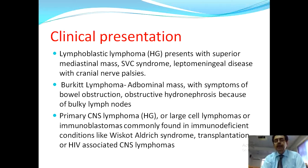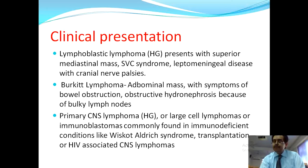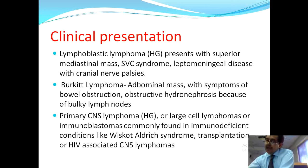Burkitt lymphoma may present with jaw or maxilla involvement, or with abdominal masses due to GI tract involvement. The patient presents with GI obstruction, sometimes perforation, and sometimes obstructive hydronephrosis from ureteral obstruction by bulky abdominal lymph nodes. Primary CNS lymphomas, large cell lymphomas, and immunoblastomas are commonly found in immunodeficiency conditions like Wiskott-Aldrich syndrome, where patients have eczema, thrombocytopenia, immunodeficiency, bloody diarrhea, and recurrent infections.